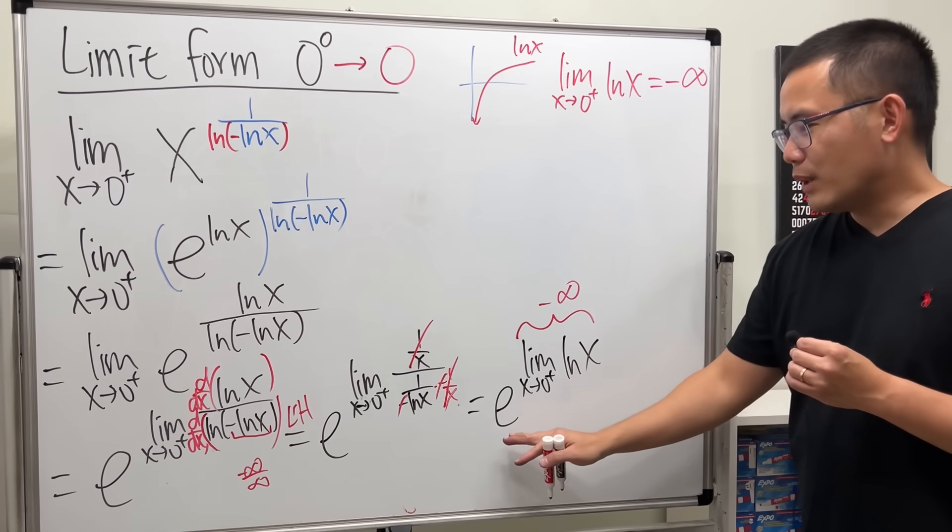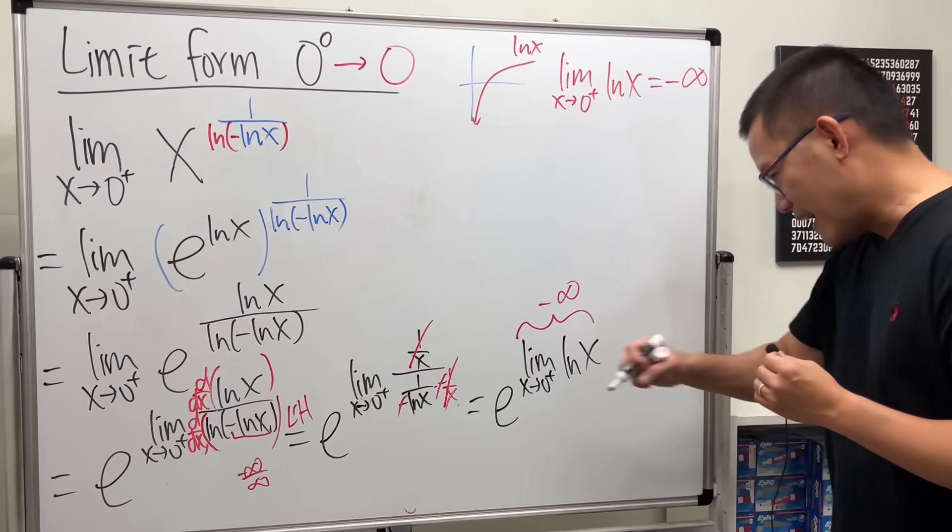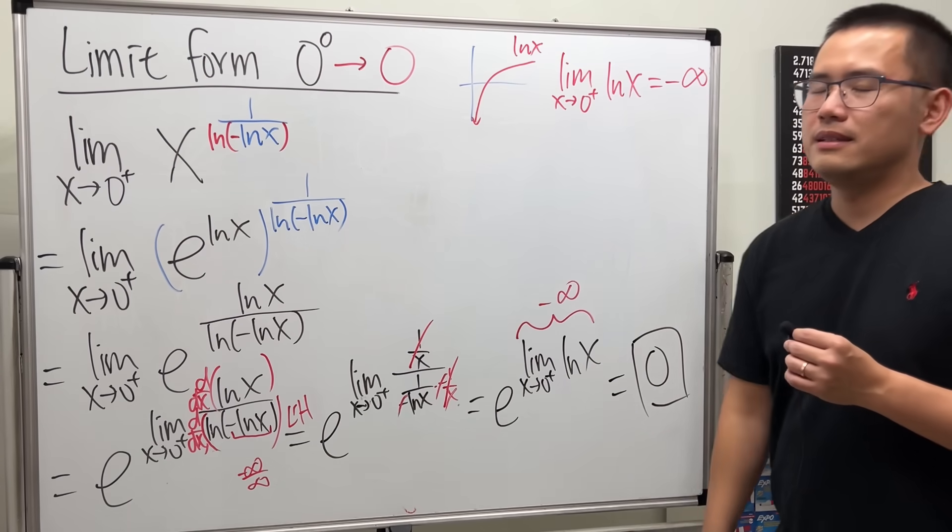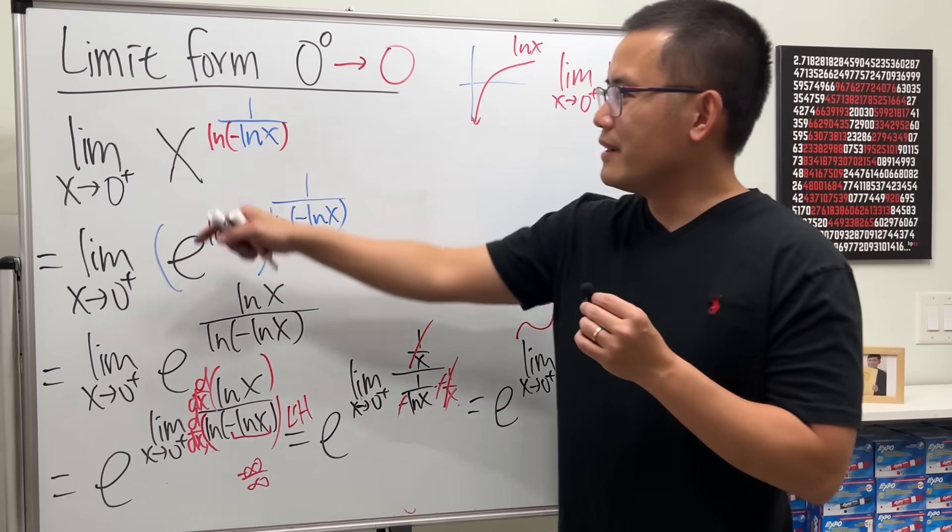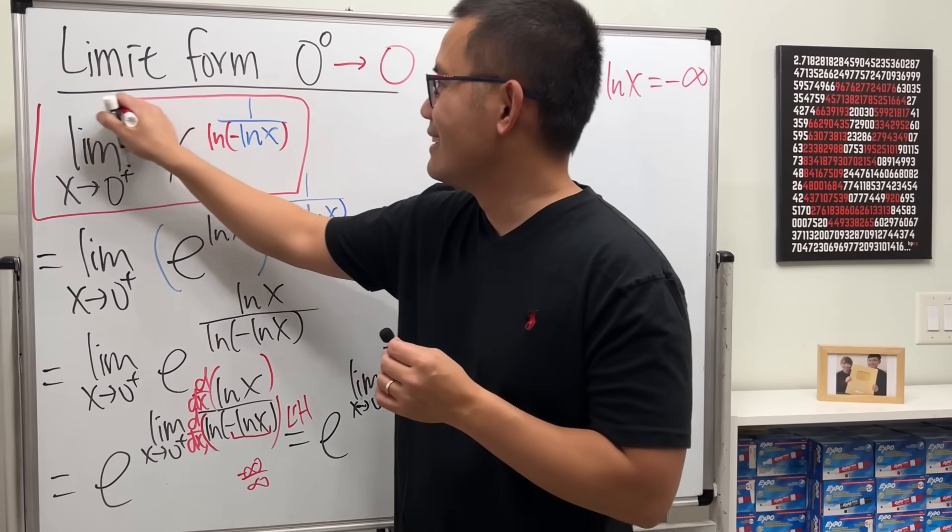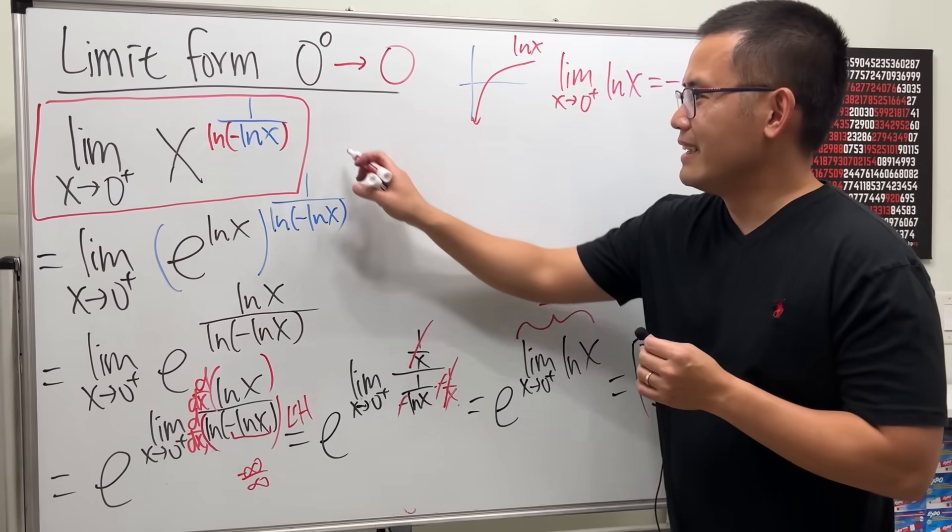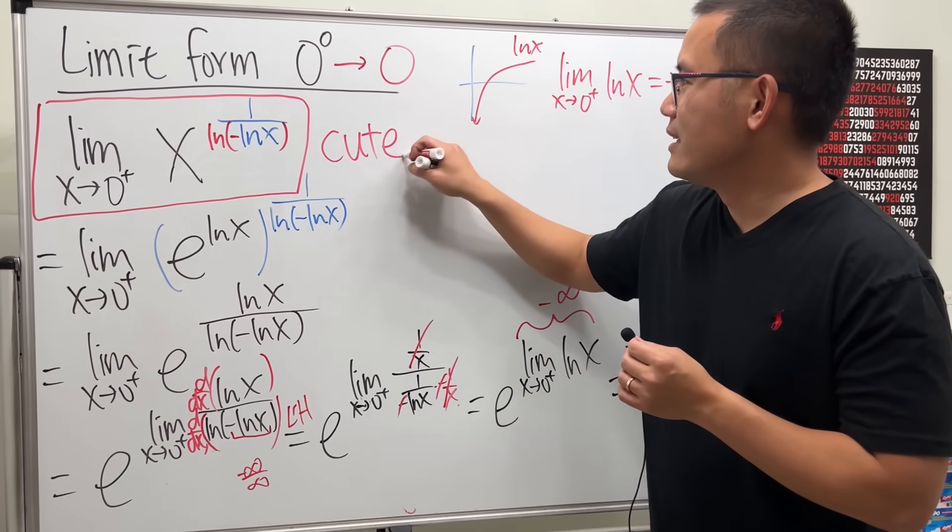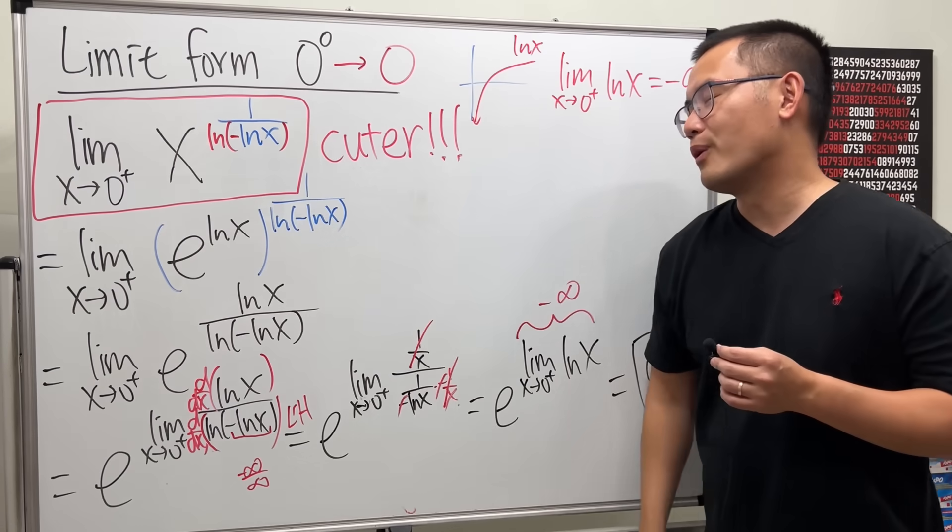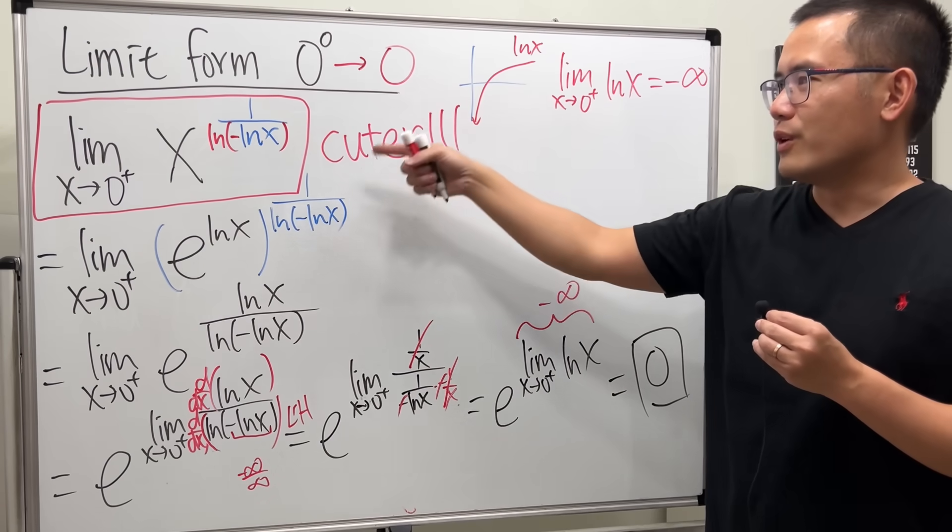And now we just have e to the negative infinity. You got it, yes that's zero. So this right here is definitely a much cuter, yeah, it's a much cuter limit that will give you zero to the zero's power being equal to zero for the limit.